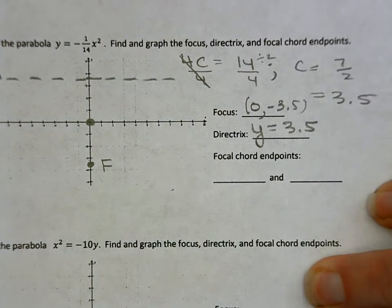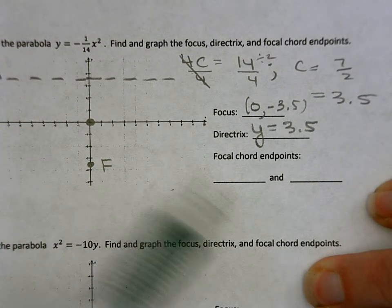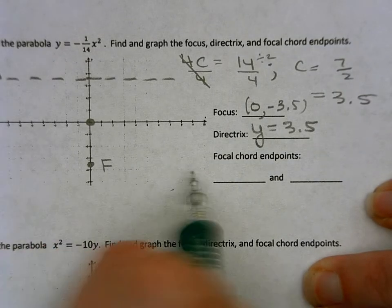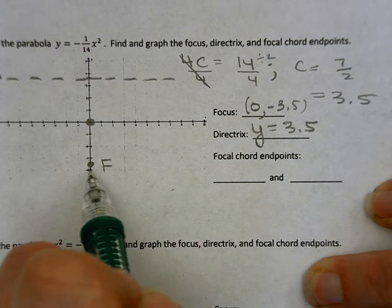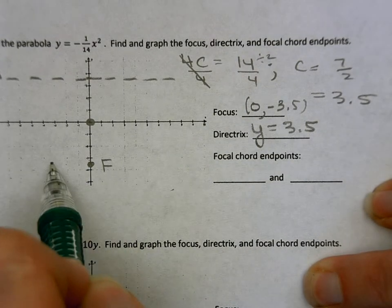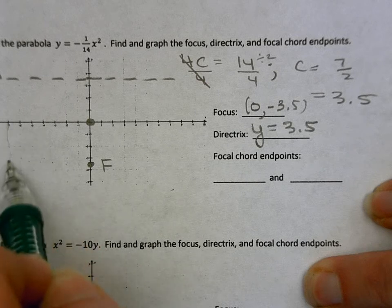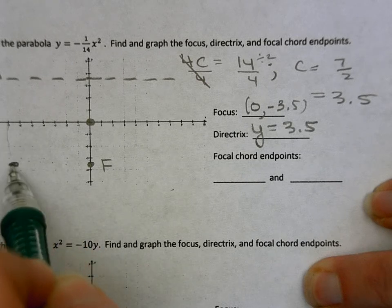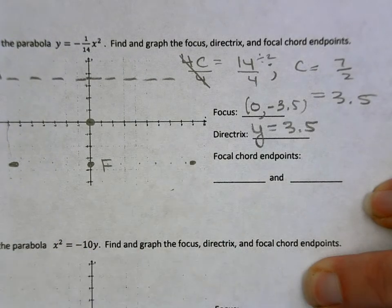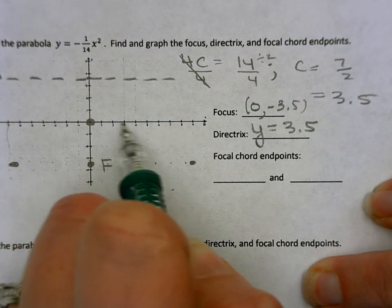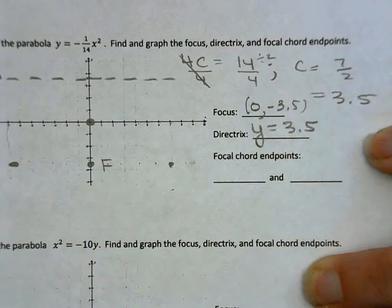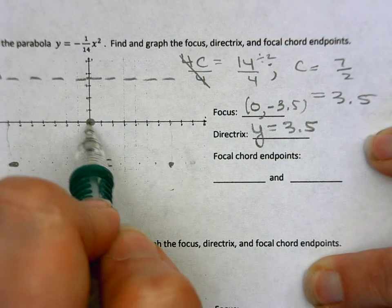And then now for my focal chord endpoints, I need to get my parabola accurate. And I don't want to go down a 14th and over 1. So I know that the whole length needs to be 14. So I'm going to go left 7 and right 7. I think I went 7 there. I think I went too far. There we go.